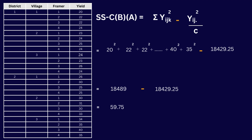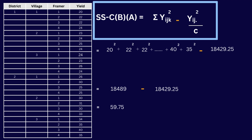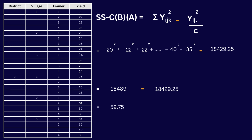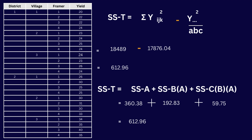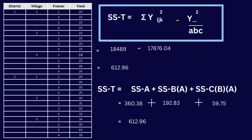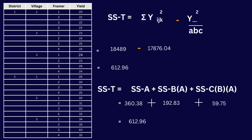Let's find the sum of squares of CBA. Using the formula, yijk represents individual yield values such as 20, 22, 22, 24, 23, 24, and so on. After resolving the formula, we got 59.75 as the sum of squares of CBA. For the sum of squares total, we already know that the summation of yijk squared is 18,489 and y triple dot squared divided by abc equals 17,876.04, giving us 612.96 as the sum of squares total.